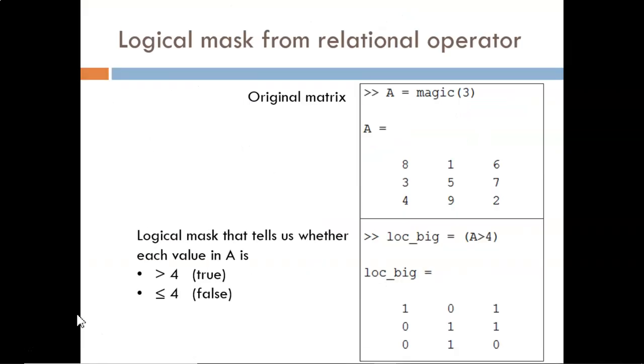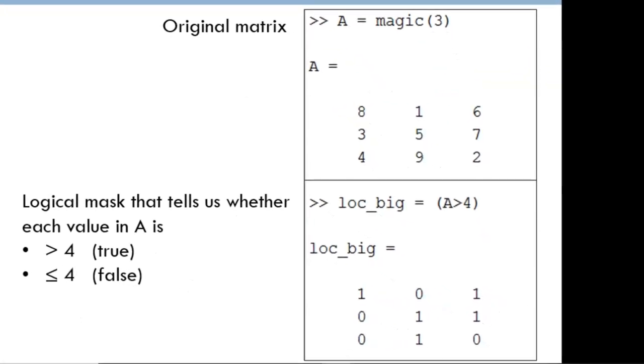We can apply a relational operator across multiple values at once. Here, we evaluate if each value in A is larger than 4. For those values that are, a true is filled into the corresponding matrix. Otherwise, a false is filled in. Is 4 bigger than 4? No, it's not, so we see a false in the lower left corner. This matrix of true and false values is known as a logical mask. We'll explore the uses of logical masks in a later lesson.